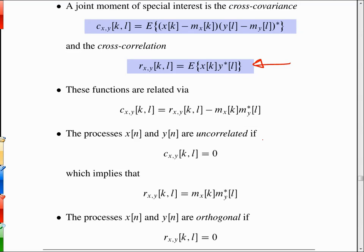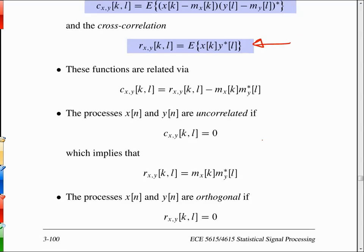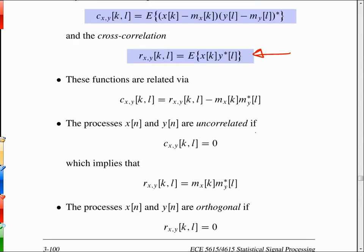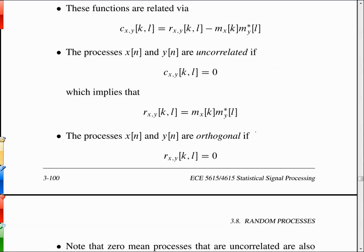Two processes can be uncorrelated—then the cross covariance is zero for all values of k and l. And if the cross correlation is equal to zero, then you have the orthogonality condition applying.